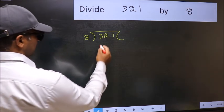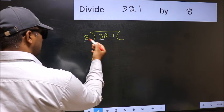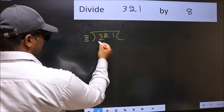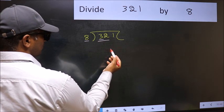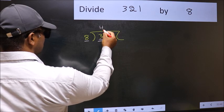Next, here we have 3 and here 8. 3 is smaller than 8. So we should take two numbers, 32. When do we get 32 in 8 table? 8 fours 32.